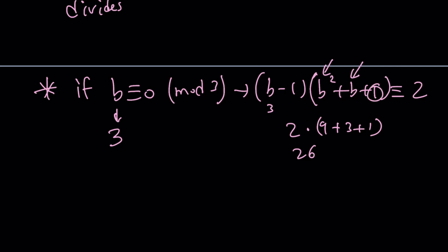Great. Second case: if b ≡ 1 (mod 3)—I'm not going to write mod 3 because hopefully that's understood—then we have this product.